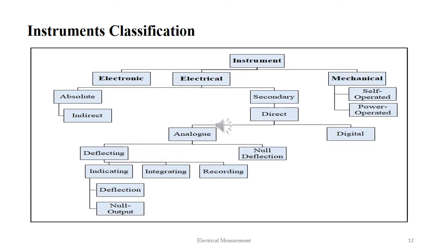The picture below depicts a broad classification of instruments. Instruments are broadly classified into three categories: electronic, electrical and mechanical. Electronic instruments are further categorized as digital instruments. Electrical instruments are of two types: absolute and secondary. Absolute instruments are indirect in nature and secondary instruments are direct in nature. Secondary direct instruments are further classified into analog and digital. Analog instruments are subdivided into deflecting and null deflection. Deflecting instruments can be indicating, integrating and recording. Mechanical instruments can be self-operated or power-operated.